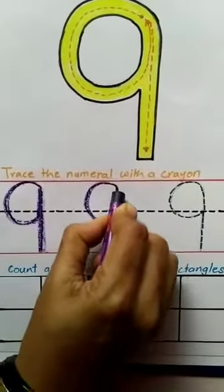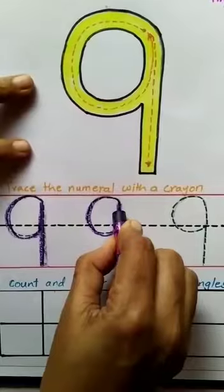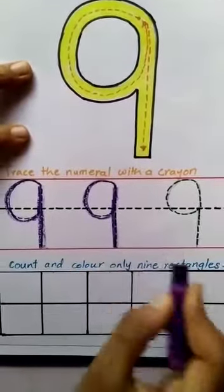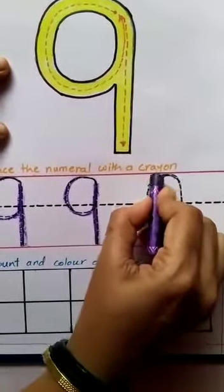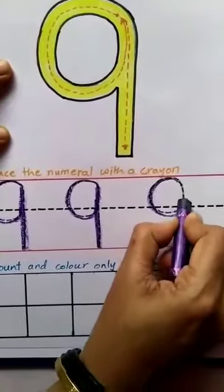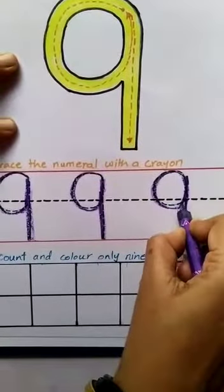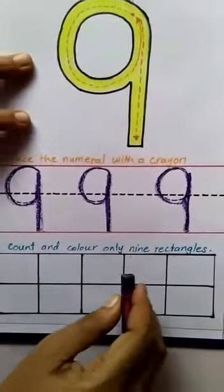Complete the circle and then a standing line. Number 9. A circle and a standing line. Number 9.